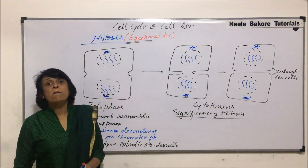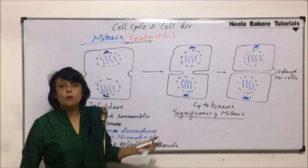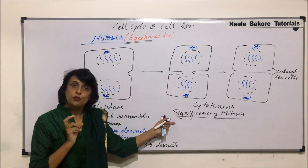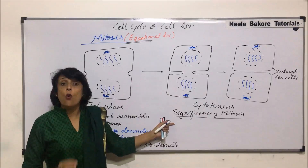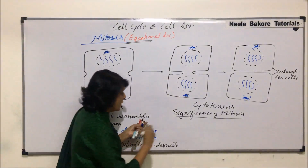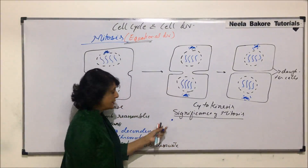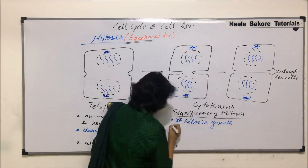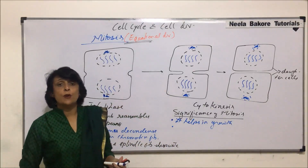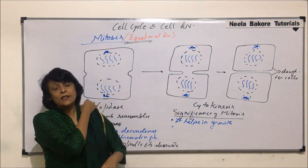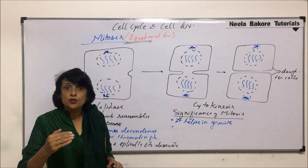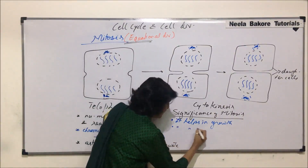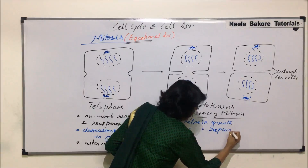Mitosis is the main type of division responsible for growth. For example, the zygote formed after fusion of gametes divides only by mitotic division. The first significance is that it helps in growth. Additionally, if there is any damage to a tissue — for example, if skin gets cut — new skin cells are formed by division, so mitosis helps in repair and regeneration.